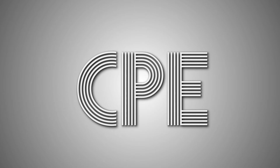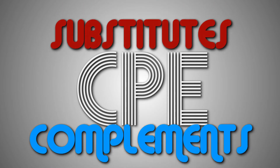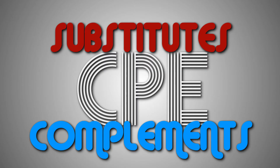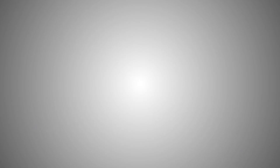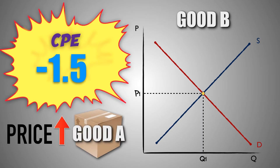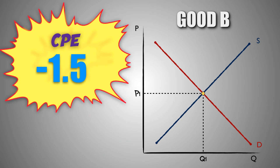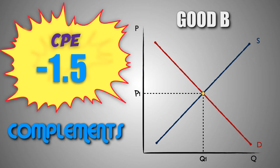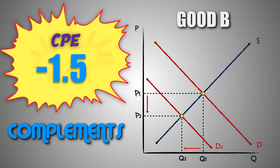We can also use the cross-price elasticity coefficient to identify whether two goods are substitute or complementary goods, and then predict changes in the market for a related good. For example, assume that this is the market for good B. Good A and good B have a cross-price elasticity coefficient of negative 1.5, and the price of good A increases. Because the cross-price elasticity coefficient between these two goods is negative, we know that good A and good B are complementary goods. As a result, if the price of good A increases, the demand for good B, a complement to good A, will decrease, as consumers will buy lesser quantities of good A, and therefore won't need to buy as much of good B. This will cause the price of good B to decrease, and reduce the quantity of good B sold in the market.